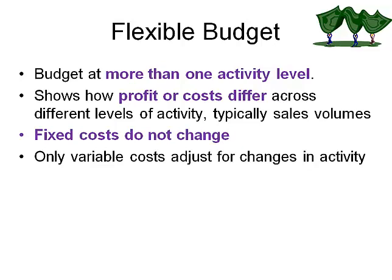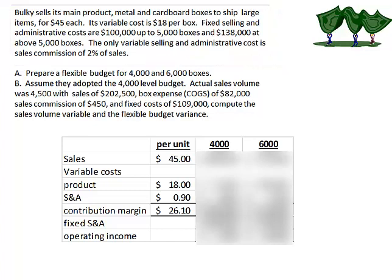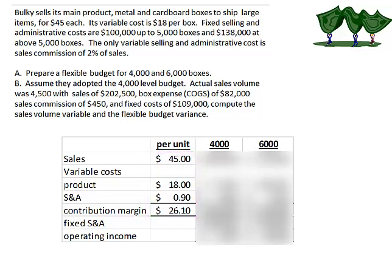Let's work through an example. Bulky sells their main product for $45 per unit. Variable cost per box is $18. Fixed costs are $100,000 for up to 5,000 boxes and $138,000 for over 5,000 boxes. They have one variable selling and administrative cost — sales commission at 2% of the sales price, which is $0.90. From this, we can compute the per-unit contribution margin: $45 sales price, minus $18 variable cost, minus $0.90 commission.